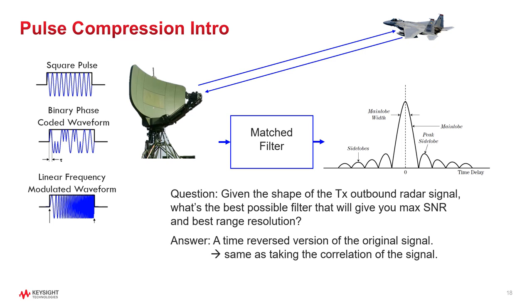By the 1950s, the industry had wholeheartedly embraced this concept of pulse compression, and people were looking at improved ways of having sharper main lobes and lower side lobes. They learned that by having a wider bandwidth signal, that leads to lower side lobes and taller main lobes. The most common way to increase signal bandwidth is to apply linear frequency modulation — an increasing frequency with respect to time. Fundamentally, this led to smaller and lighter hardware, less power consumption, and more reliable radar systems.